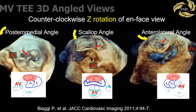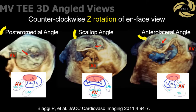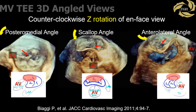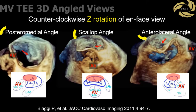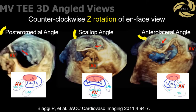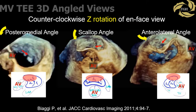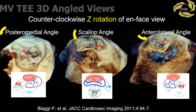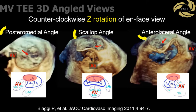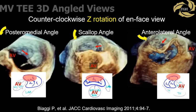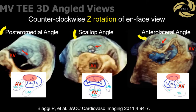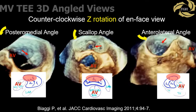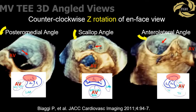Angled views is a simple concept developed at our institution, which involves Z-rotation of the 3D volume from the on-face view through 360 degrees to look at different portions of the mitral valve. This does not use any additional analysis software. Counterclockwise rotation by 90-degree increments shows the posterior commissure, then the scallop view of the posterior leaflet, and finally the anterior commissure.